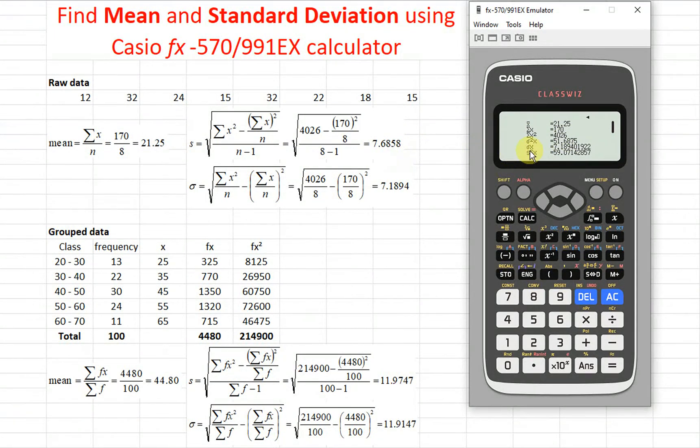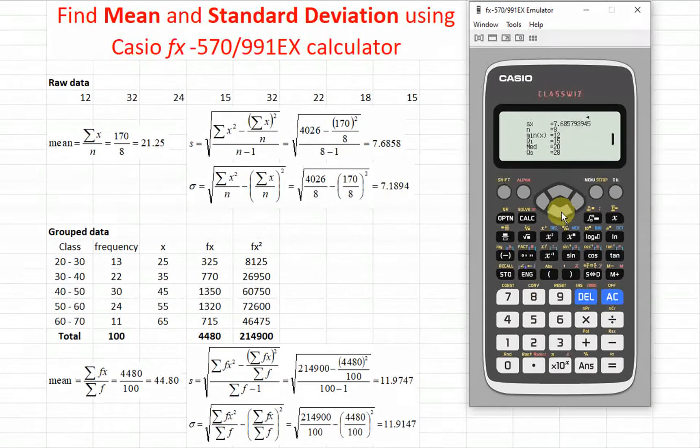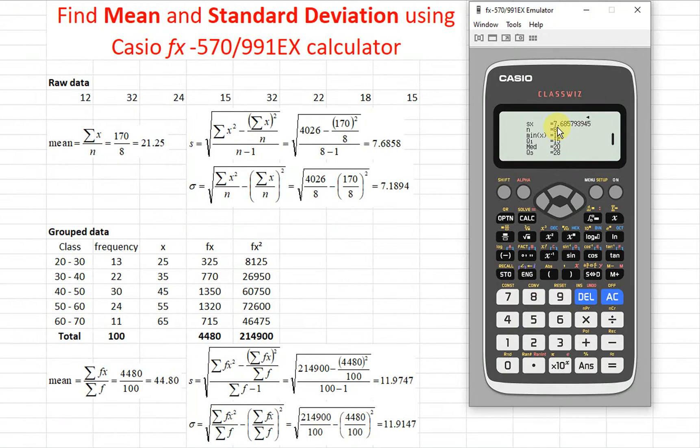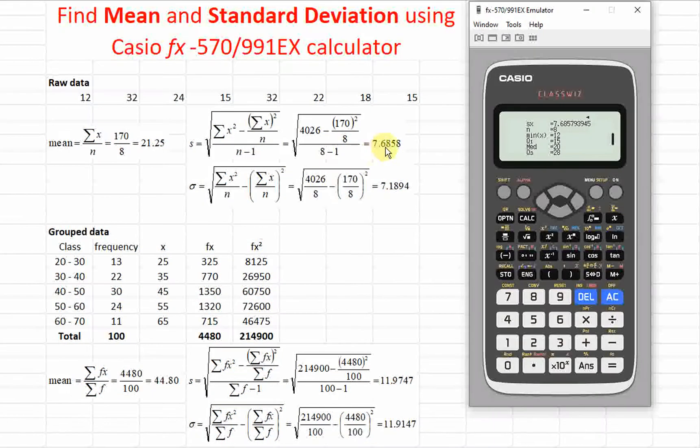And if we want the population standard deviation sigma x, then it will be 7.1894, as we can see here. Then we scroll down, we press the down button, then we can get the sample standard deviation 7.6858.